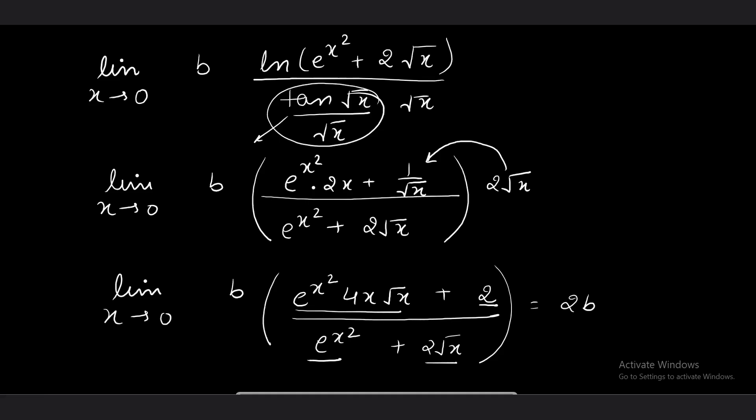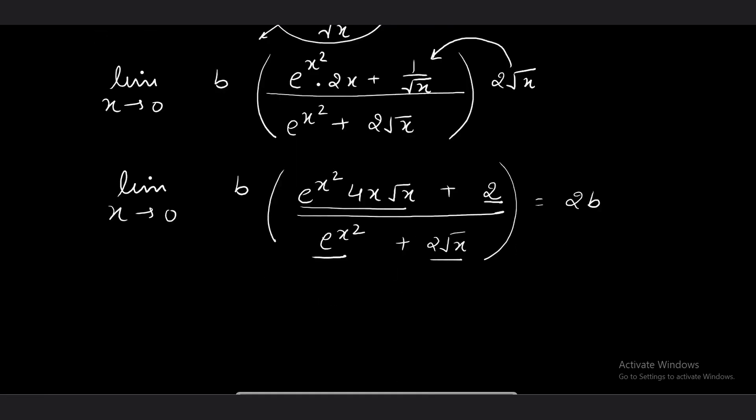The left-hand side expression limit is 2b, the right-hand side expression value is 3. Now 2b is given equal to 3, so b = 3/2. We have evaluated the value of b. The value of b turns out to be 3/2, which is our answer to the question.